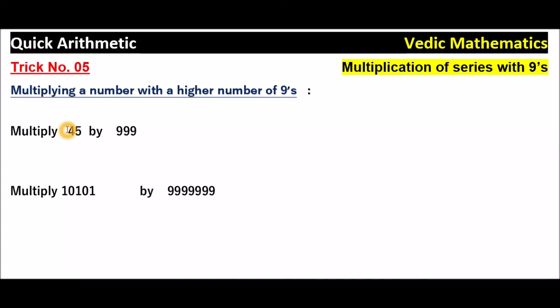Very simple. First, to the left side of the given number, put a zero — so we have 045. Then subtract 1 from this number: 045 minus 1 is 044.